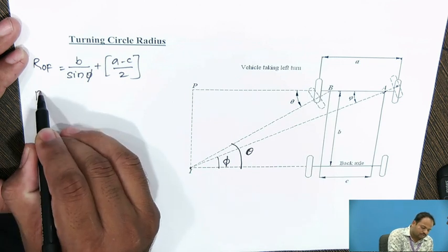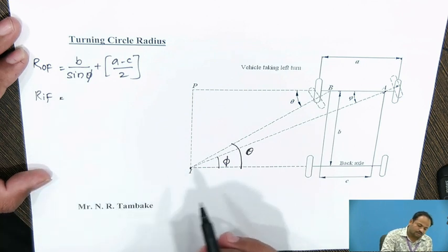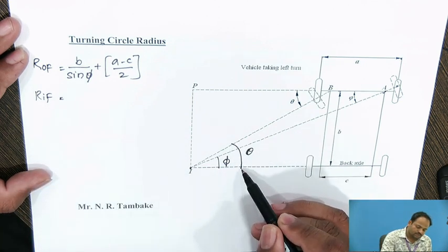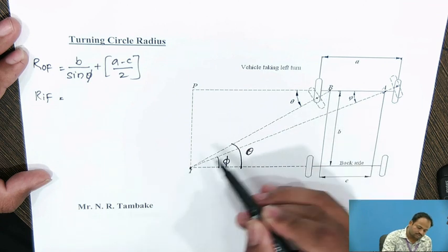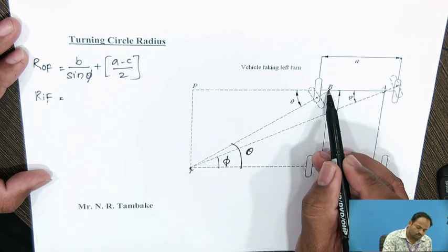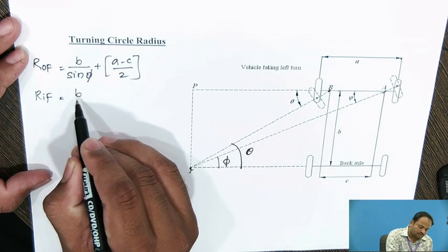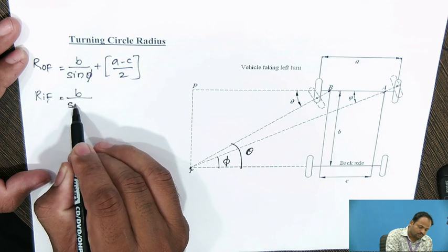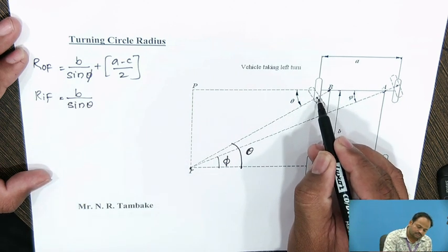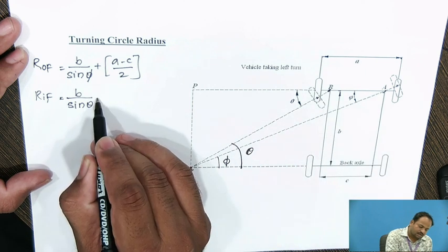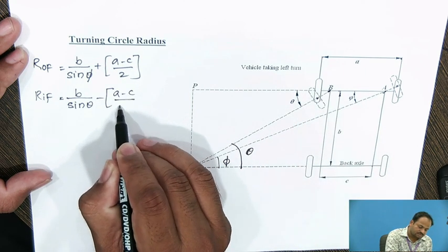Now we will discuss the turning circle radius of the inner front wheel. Here only the theta angle is used. We calculate the distance from point I to point B, which is B upon sin of theta, and then subtract the remaining distance, which is A minus C divided by 2.